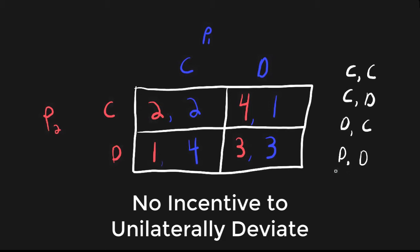Let's look at don't confess, don't confess, first from the point of view of player two. Player two chooses D or C — don't confess or confess. Can player two do better by changing his strategy from don't confess to confess? Yes, because player two prefers four over three. So we know this cannot be a Nash equilibrium. We could also start with player one, who also has an incentive to switch from don't confess to confess. For it not to be a Nash equilibrium, only one player needs to have an incentive to deviate, but in this case both players do. So don't confess, don't confess is not a Nash equilibrium.